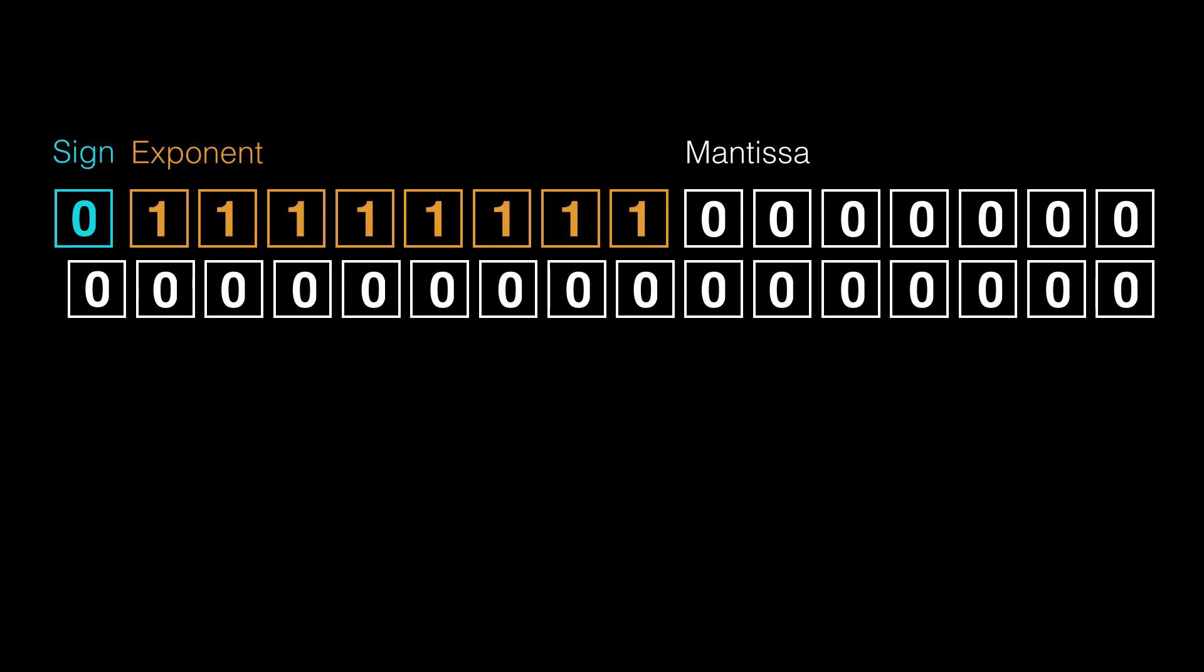If all the exponent bits are set, but the mantissa bits are all zero, that's a special number. That's infinity. The sign bit tells us if it's positive or negative infinity. If all the exponent bits are set, and at least one mantissa bit is set, that's another special number called a NaN. It stands for not a number. It's useful for when you divide by zero or take the square root of a negative number. It doesn't matter which mantissa bit or how many are set.